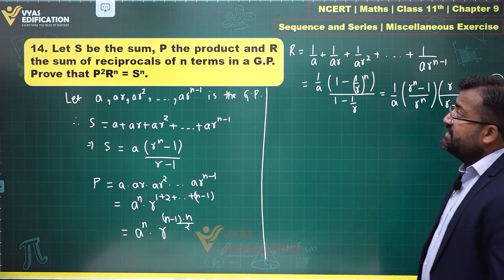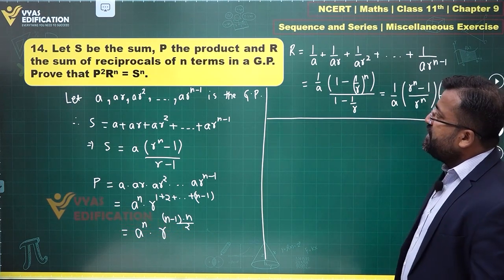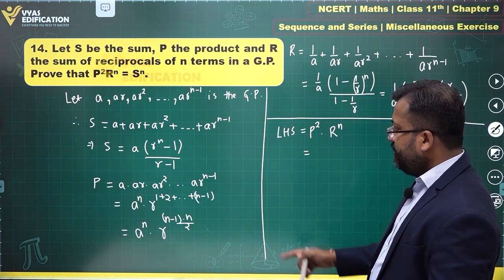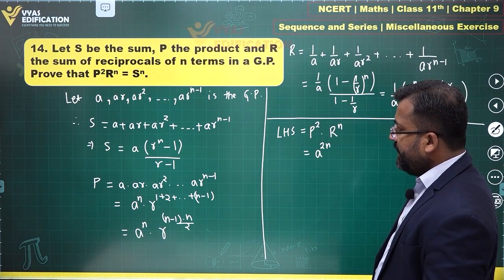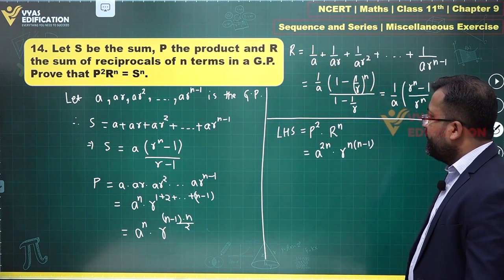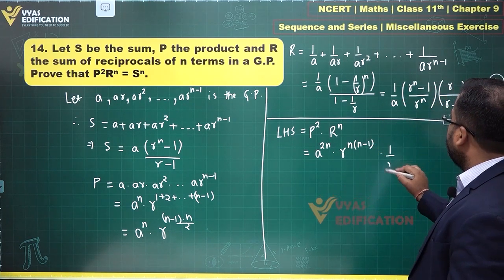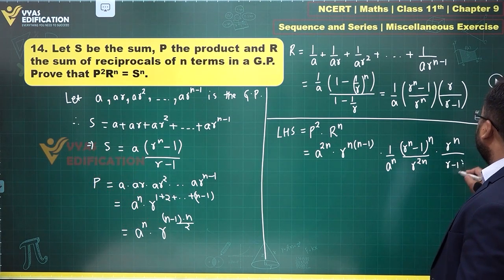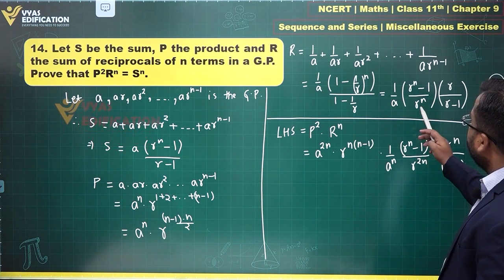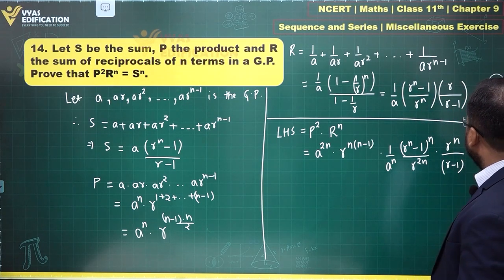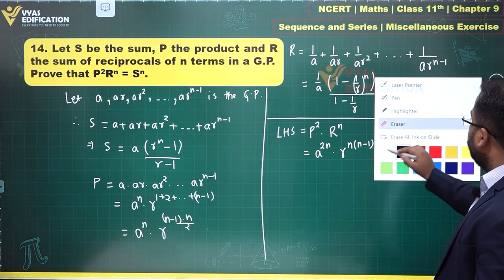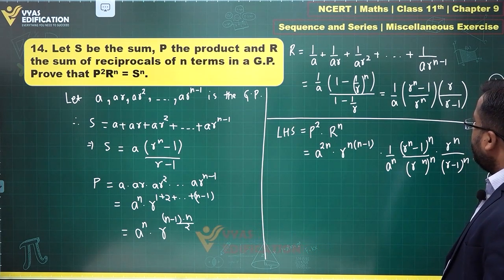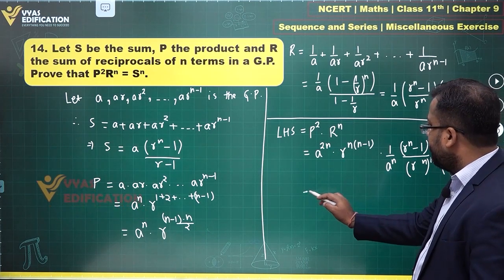We are supposed to prove P² · Rⁿ = Sⁿ. LHS = P² · Rⁿ. P² = a^(2n) · r^(n(n-1)), and Rⁿ = [1/(aⁿ · r^(n-1))] · [(rⁿ - 1)ⁿ / (r-1)ⁿ] · [rⁿ / rⁿ]. After substitution we track the powers of a and r to see what cancels.